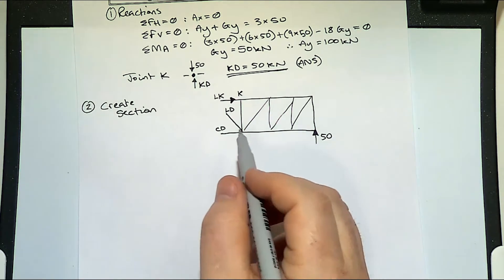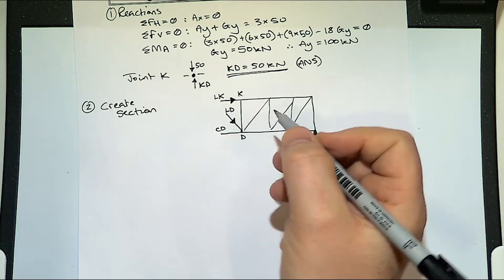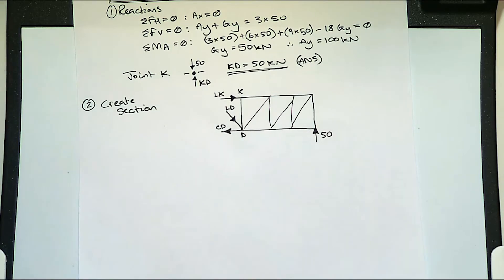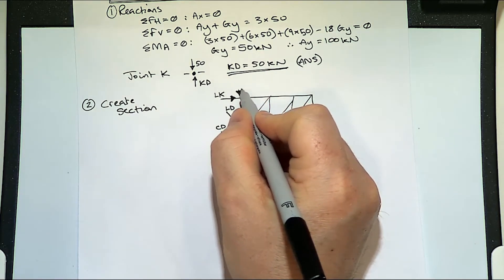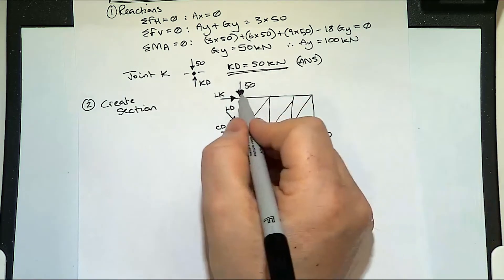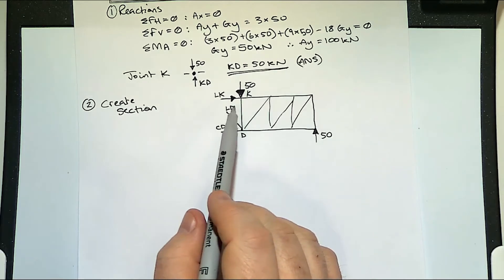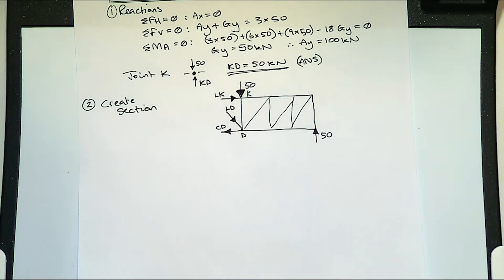And we can guess the other directions, we've got a 50 going up. We could say LDs going downwards, and if both of those arrows are pushing the whole frame to the right, we could say that CD is going to the left. And we need, on here, the 50 coming down at K. Whenever you split your section by the method of sections, and consider a side, you include all of the external forces. And each member that you cut through becomes an external force that you have to consider.